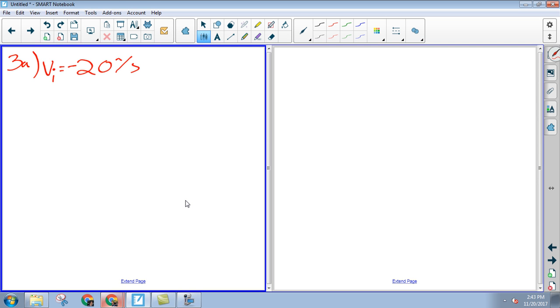All right, so here we go. So 3A, what is this worksheet 4.4? Okay, so right now they're falling down at 20 meters a second.